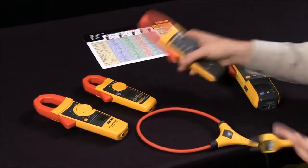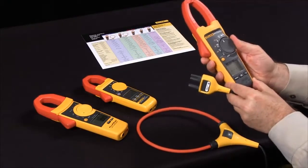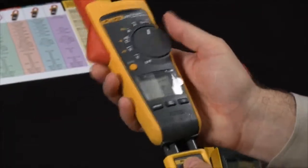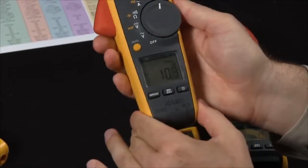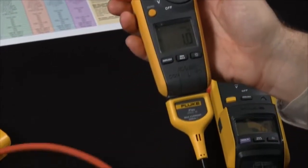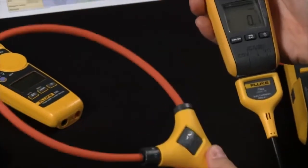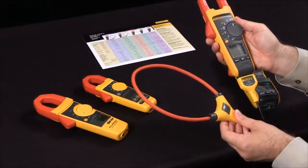Simply set the meter to iFlex, insert into the bottom of the meter, and now you're able to measure up to 2500 amps AC with our iFlex accessory.